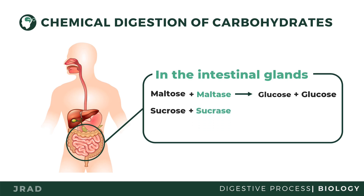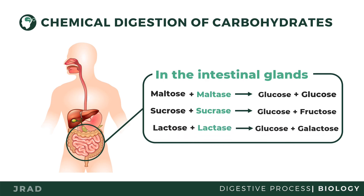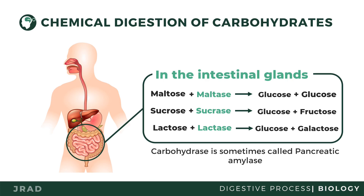Sucrase will change sucrose to glucose plus fructose. And lastly, milk and other dairy products that contain lactose will be changed by lactase to glucose and galactose. The simplest units of carbohydrates are glucose, fructose, and galactose.